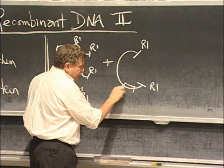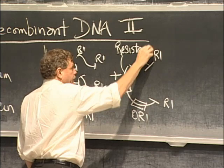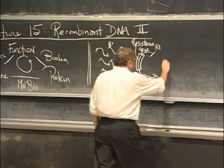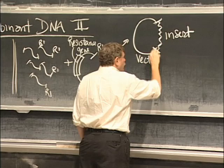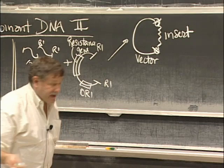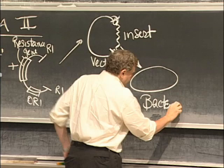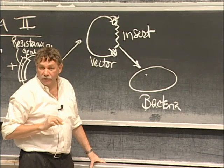The vector was cut open at an ECHO-R1 site. The vector had an origin of replication, ORI. And the vector had a resistance marker, some resistance gene that made a protein that could break down some antibiotic found in nature. We combine these two pieces. Vector now gets its insert. We call this vector, we call this insert. We attach them together using what? Ligase, the enzyme that ligates DNA. We then take this. We transform it into a bacterium.